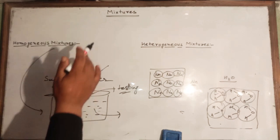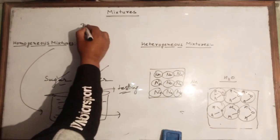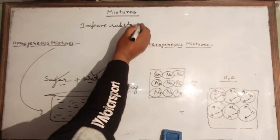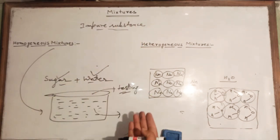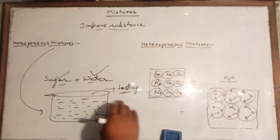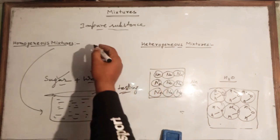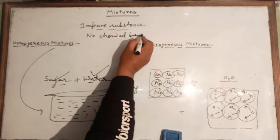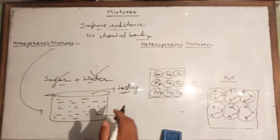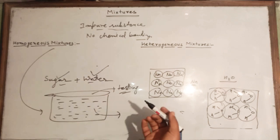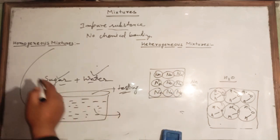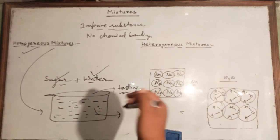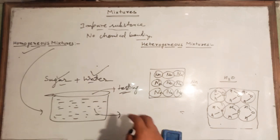In this mixture, sugar and water are both present but there is no chemical bonding between the sugar and water molecules — that's why it forms a mixture. This type is called a homogeneous mixture. In a mixture, there will be no chemical bonding. Some mixtures you can recognize by seeing, and some you cannot — the ones you cannot recognize by seeing are homogeneous mixtures.